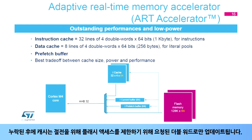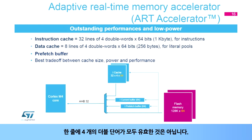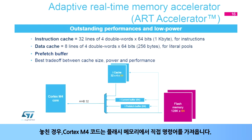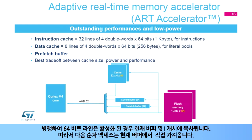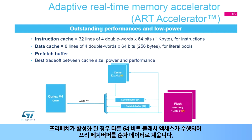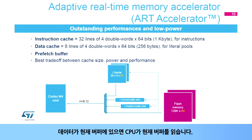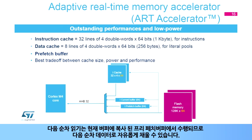After each miss, the cache is updated with only the requested double word in order to limit flash access for power saving. In a line, the four double words may not all be valid. In case of a miss, the Cortex-M4 takes the instruction directly from the flash memory. In parallel, the 64-bit line is copied into the current buffer and iCache if enabled, so the next sequential access is taken directly from the current buffer. If prefetch is enabled, another 64-bit flash access is performed to fill the prefetch buffer with sequential data. When the data is present in the current buffer, the CPU reads the current buffer, and the next sequential read is performed from the prefetch buffer.